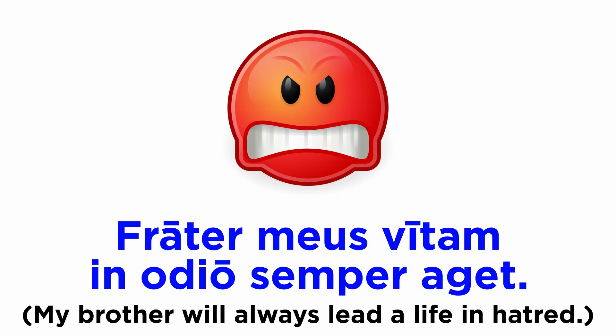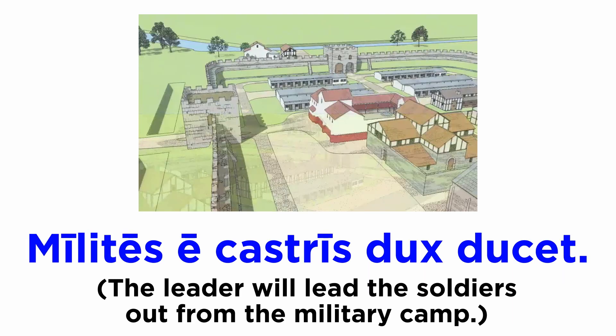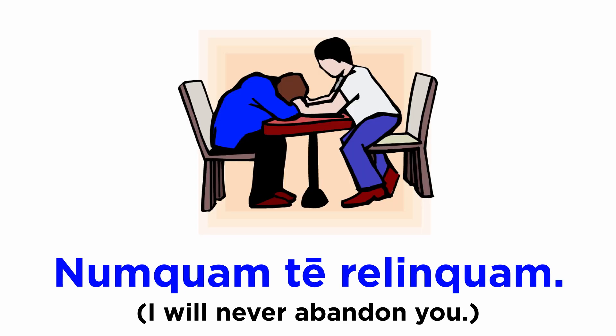Now let's see this tense used in some sentences. Frater meus vitam in odio semper aget. Is de rebus ad te scribam. Milites e castris dux ducet. Semper vera dices. Numquam te relinquam.